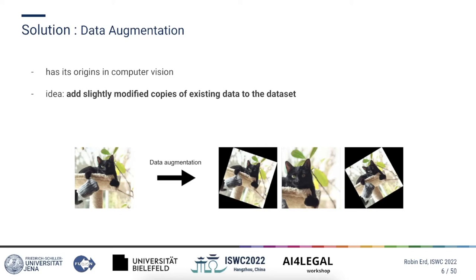This method called data augmentation has its origins in the computer vision domain, where existing training images would be for example rotated, cropped, or scaled to generate new training images. As you can see here with a cute picture of my cat, data augmentation works by essentially adding slightly modified copies of existing data to the dataset, increasing the total amount of data. And of course this can also be done for textual data.